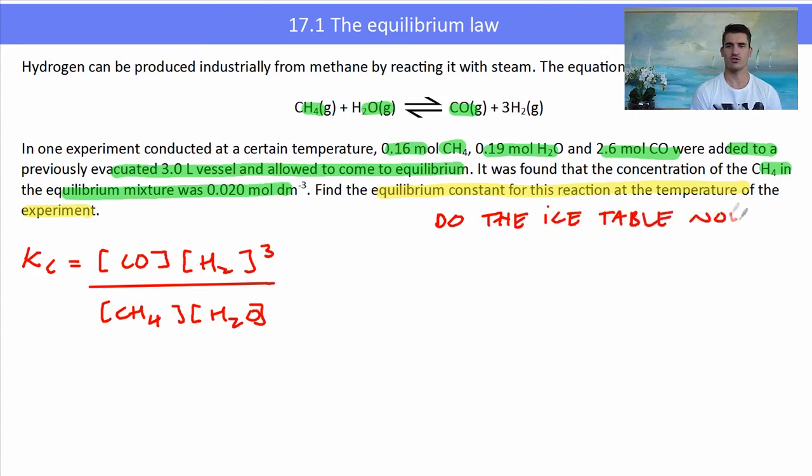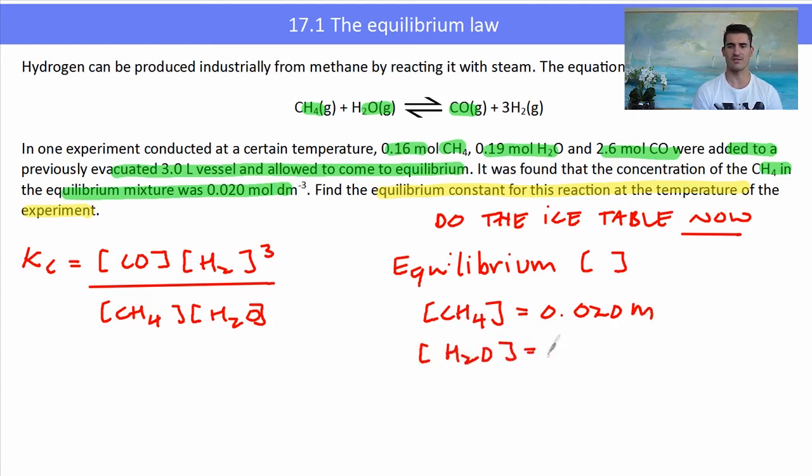So the equilibrium concentrations for the four species are as follows: [CH₄] should equal 0.020, [H₂O] should be 0.030, [CO] should be 0.0903, and [H₂] should be 0.099 molar.